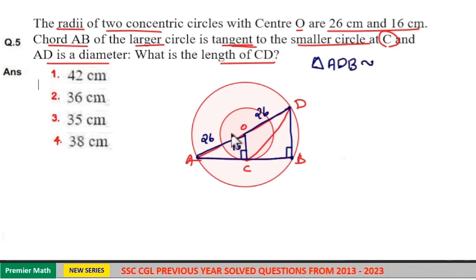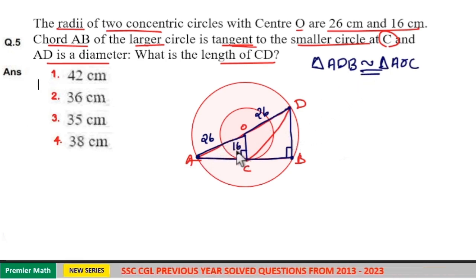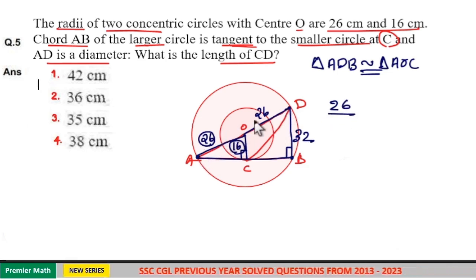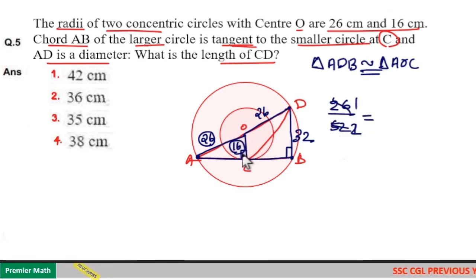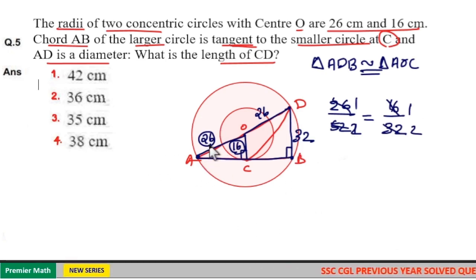The radius of the larger circle is 26. Triangle ADB is similar to triangle AOC — these two radii are present and point A is common. So the ratio of corresponding sides is equal. Since the hypotenuse of the smaller triangle is 26, the hypotenuse of the larger triangle is 52 — ratio 1 to 2. This means the heights of these two triangles are also in ratio 1 to 2: height of smaller triangle is 16, height of larger triangle is 32.